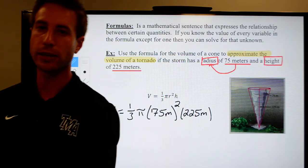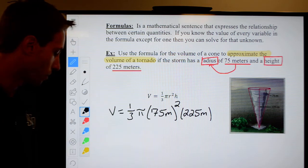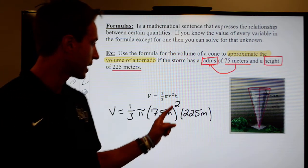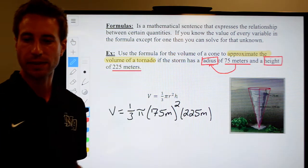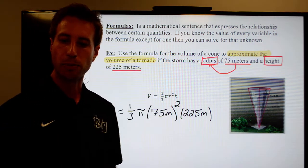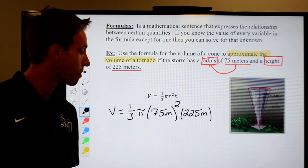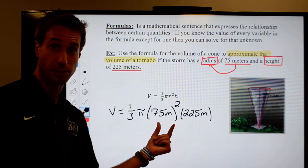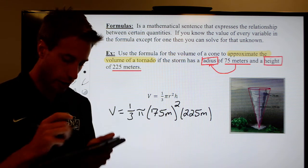Now what we're going to do is we're going to go ahead and use the order of operations to begin to evaluate this formula. First thing we're going to do is we're going to take care of the exponent. I plugged it into my calculator. I did 75 meters squared and you should come up with 5,625 meters squared. Remember, you square everything inside the parentheses. The 75 gets squared and the meters gets squared as well.